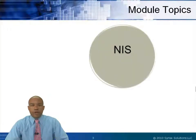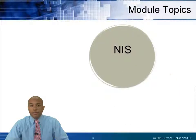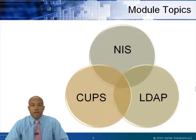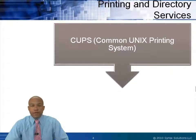Today we'll talk about the Network Information System directory services platform, LDAP — another way in which we can have good directory services management — and CUPS, which is a service set for printing. First, let's look at CUPS.